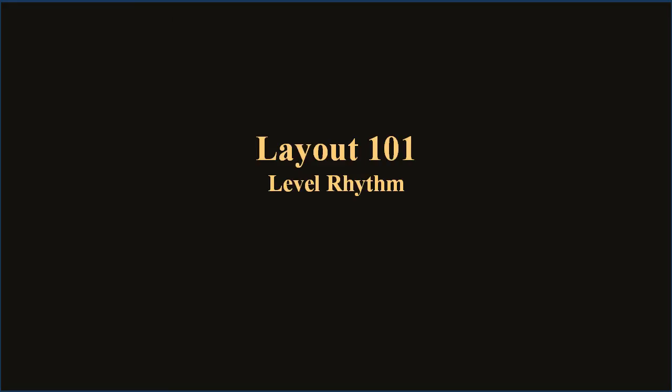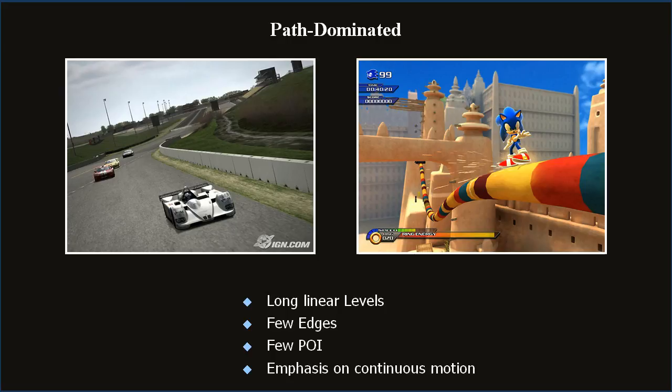Level rhythm is one of the most basic ways to control the player's emotional experience. Use the level structure to control the pace from moment to moment — different patterns result in different emotional states. Path-dominated gameplay involves fast, instinctive reactions by emphasizing continuous movement, typically through long linear levels, for example Gran Turismo or Sonic the Hedgehog. In racing games, edges and points of interest risk slowing the player down. A path-dominated rhythm features long linear levels, few edges, few points of interest, with an emphasis on continuing motion.